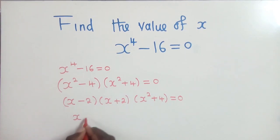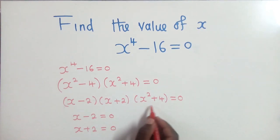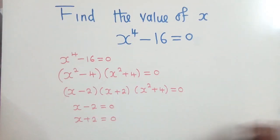So we shall have x - 2 = 0. And for this one, x + 2 = 0. For this one also, we'll write here x^2 + 4 = 0. Okay.